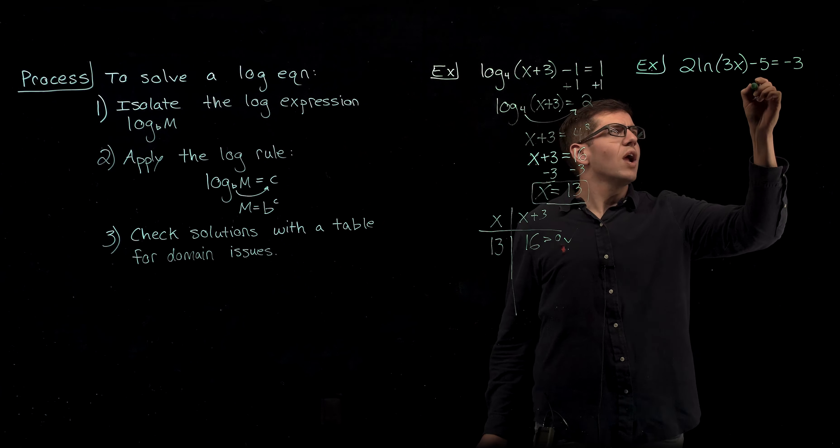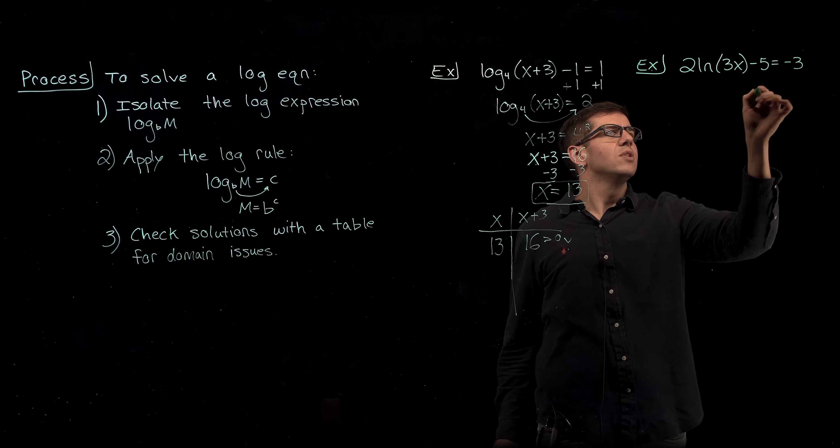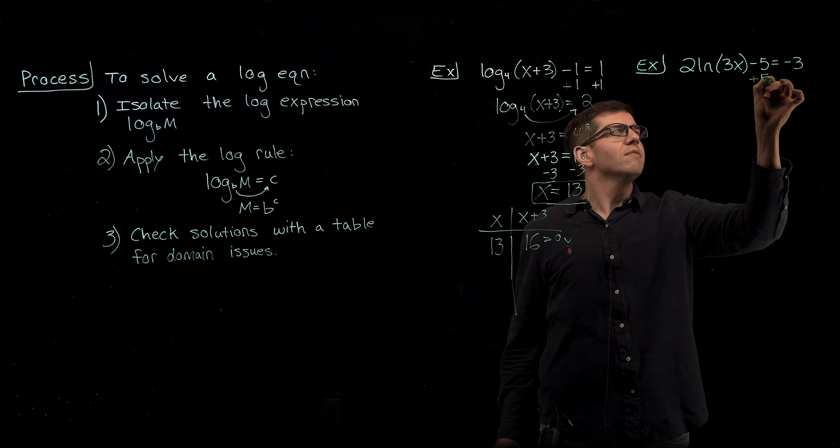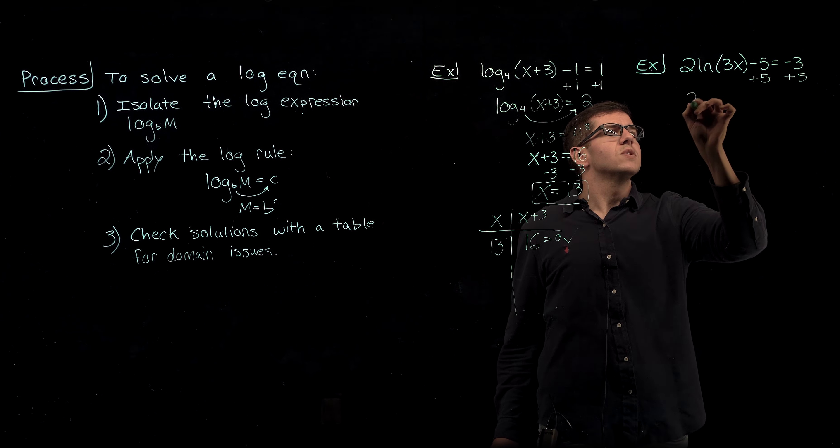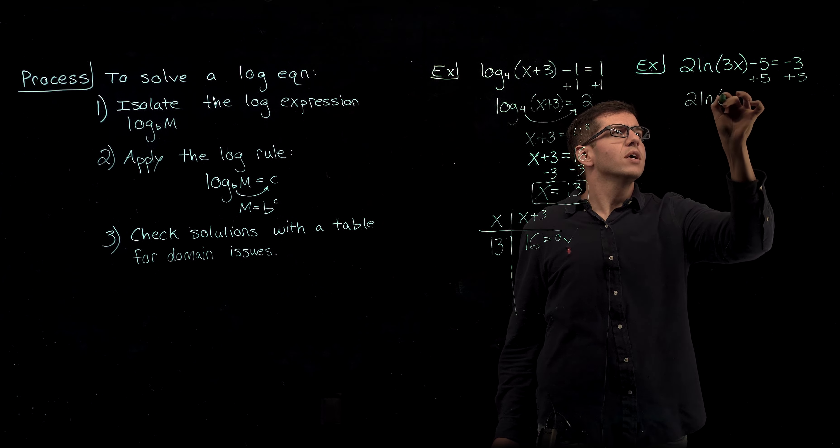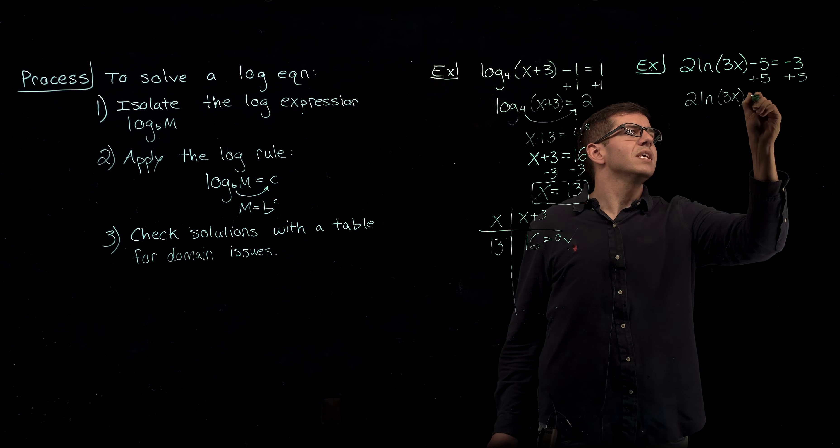All right, trying this out, we'll start by isolating this natural log by adding 5 to each side of the equation, which gives us 2 natural log of 3x equals 2.